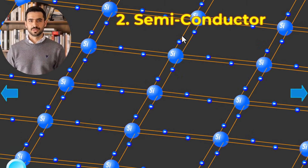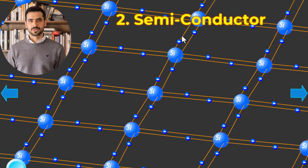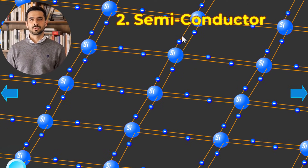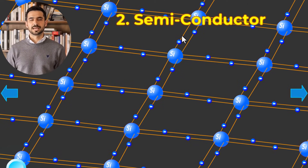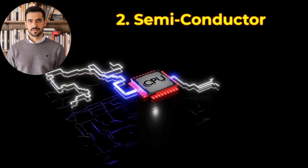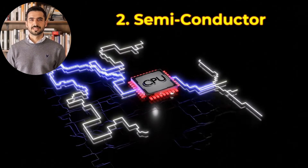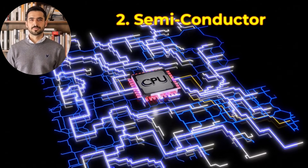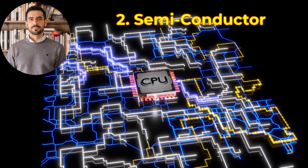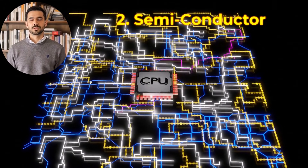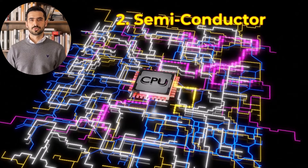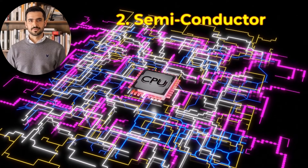Silicon is the most widely used semiconductor, powering devices like microchips, solar panels, and LEDs. Here's a quick animation of a microchip processing data, showing how semiconductors make modern devices possible. Did you know that without semiconductors, we wouldn't have smartphones or computers? Amazing, right?